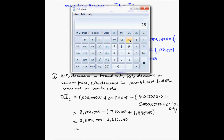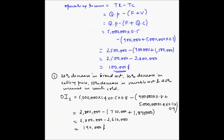So OI1 = 2.8 million − 2.61 million = $190,000. Basically, if we decrease the fixed cost by 20%, decrease the selling price by 20%, decrease the variable cost by 10%, and increase units sold by 40%, our operating income changes to $190,000. Compared to our original operating income of $100,000, this is an increase of $90,000.